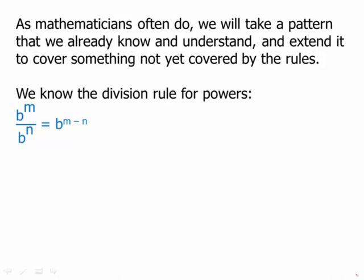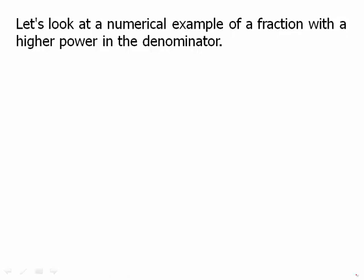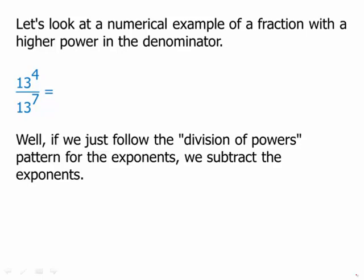In this particular case we know the division rule for powers. We know that if we made the denominator exponent bigger and the numerator exponent smaller, then we would get a negative result for the subtraction and that would give us a negative exponent. Let's look at a numerical example with a higher power in the denominator. Suppose we had 13 to the 4 divided by 13 to the 7. If we just follow the division of the power pattern for exponents, that tells us to subtract the exponents, we'd get 13 to the 4 minus 7 or 13 to the negative 3.